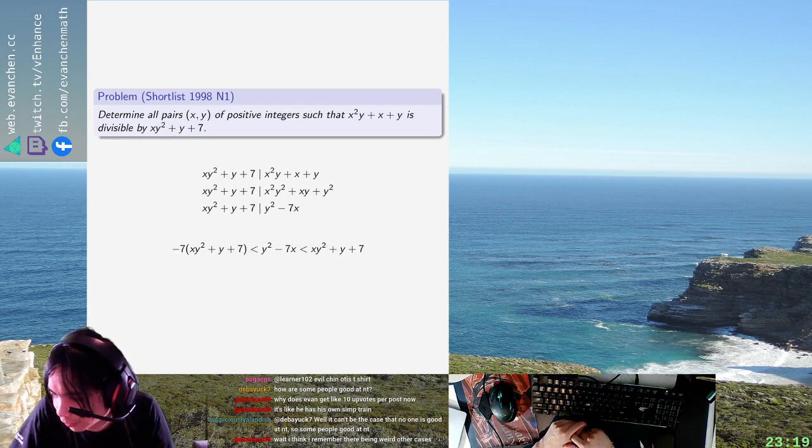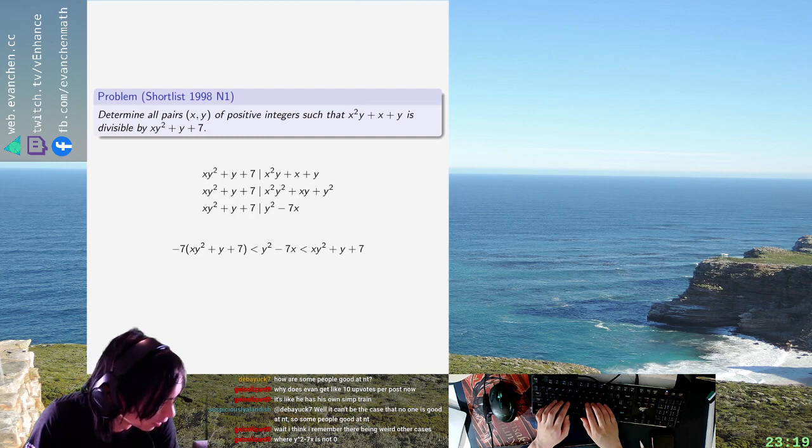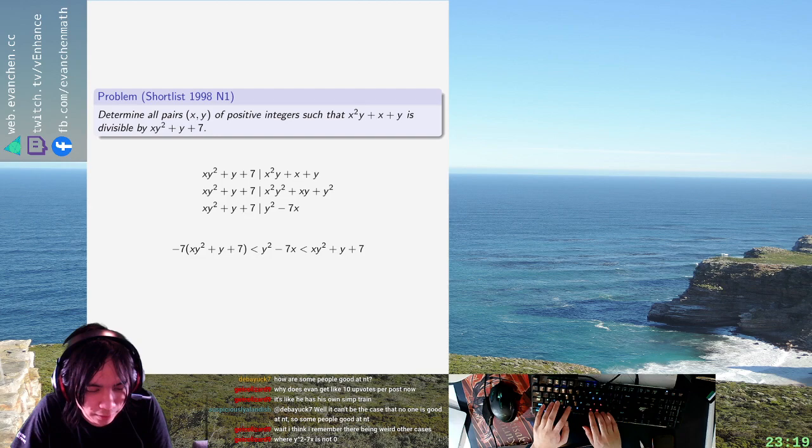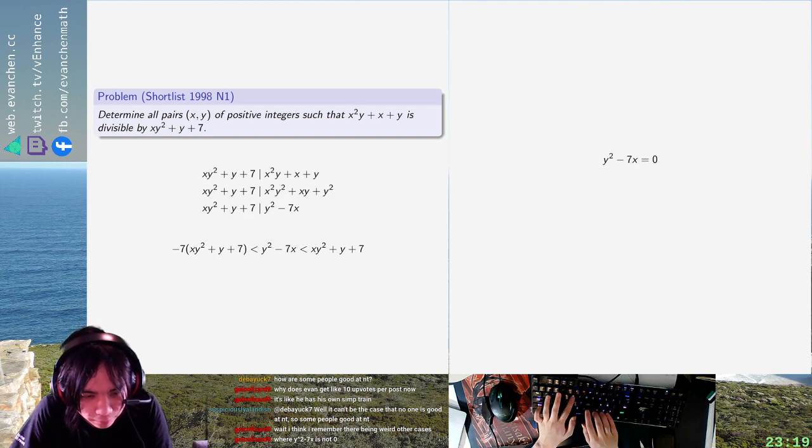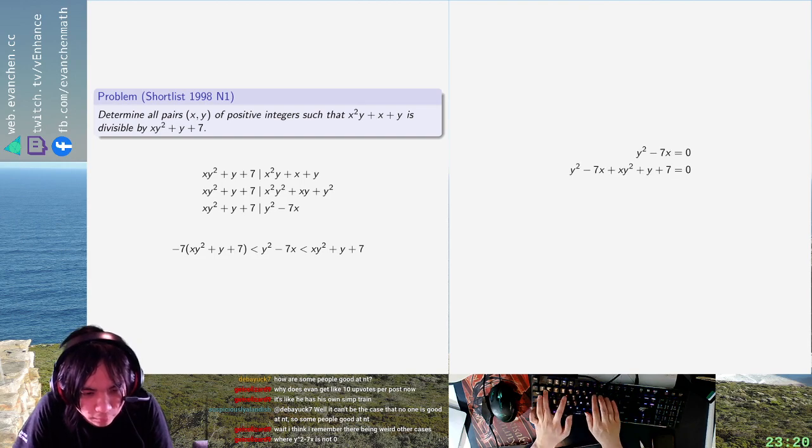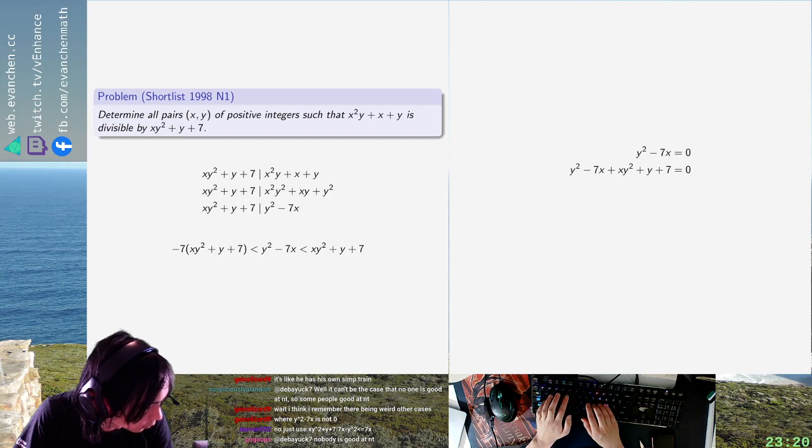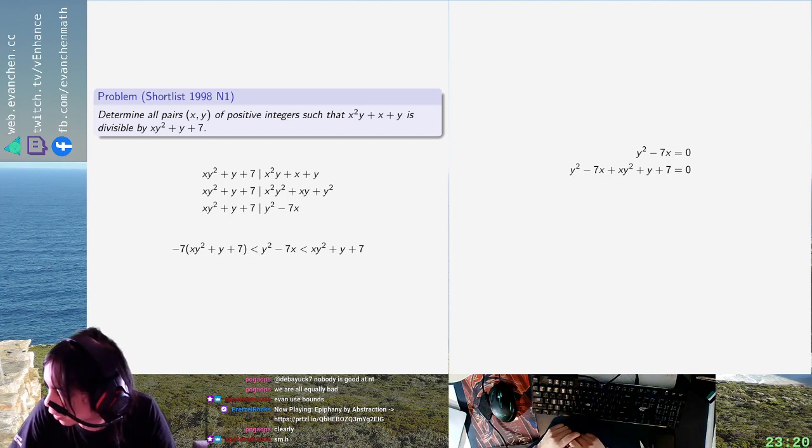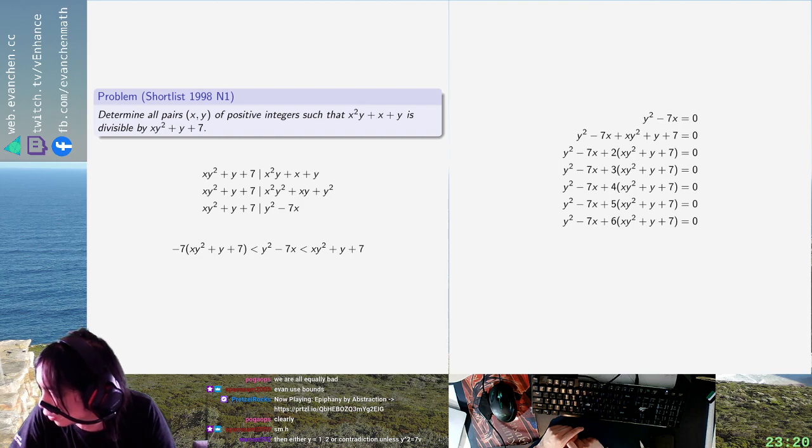So now there's, like, six diophantines, I guess, to solve. Do I have to do all 7? I don't want to do all 7! Okay, okay, let's just do all 7 pieces, whatever. It'll be quick. So y squared minus 7x equals 0 is a solution. So I guess that always works. And are these all linear in x? They're linear in x.